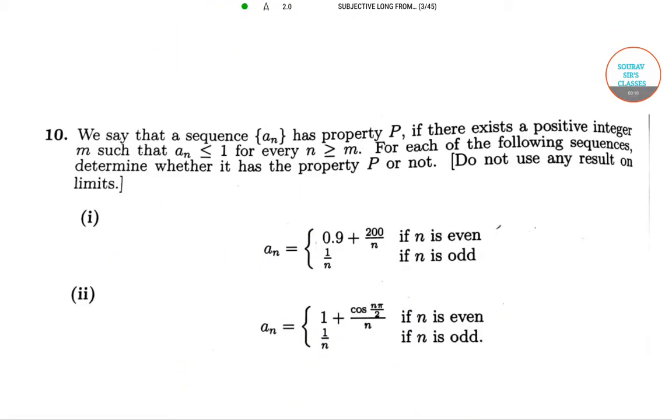In our next question, we have a sequence A_N, and this sequence is said to have some property P if there exists a positive integer M such that A_N is less than or equal to 1 for every N greater than or equal to M. And we have to determine whether these sequences have that property or not.